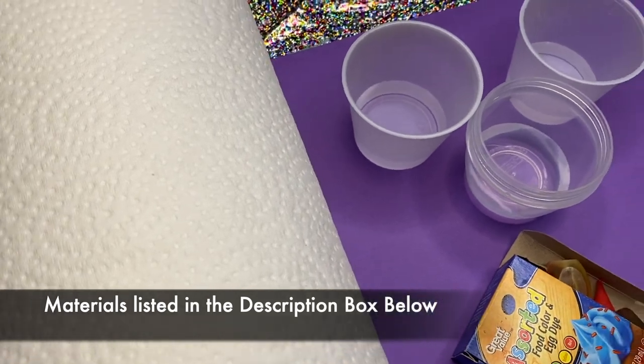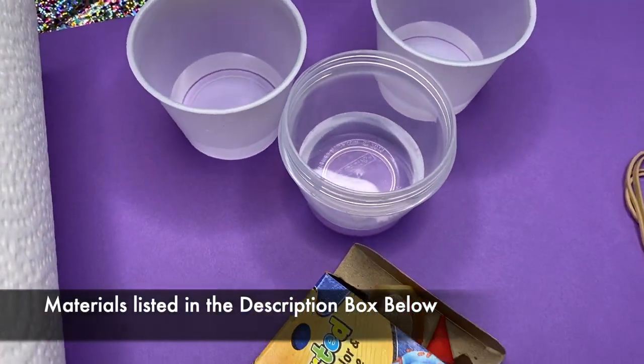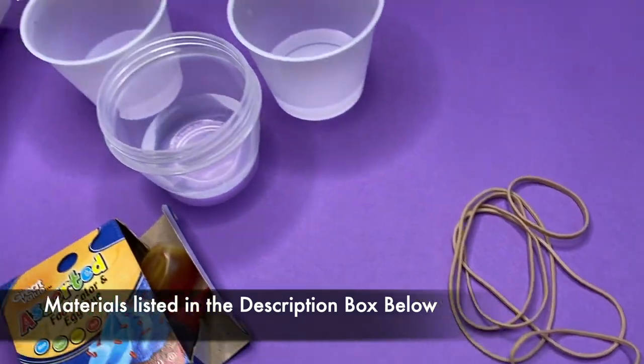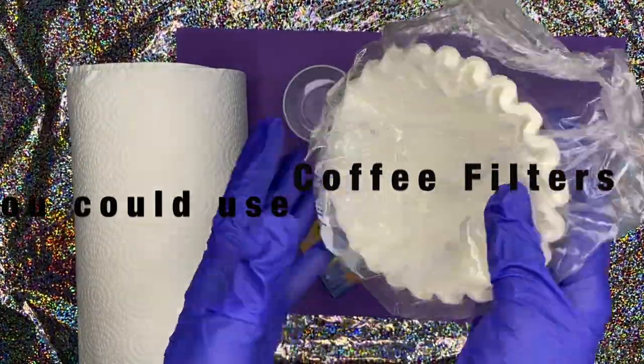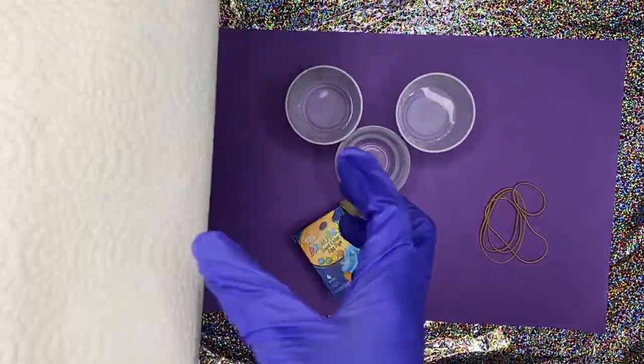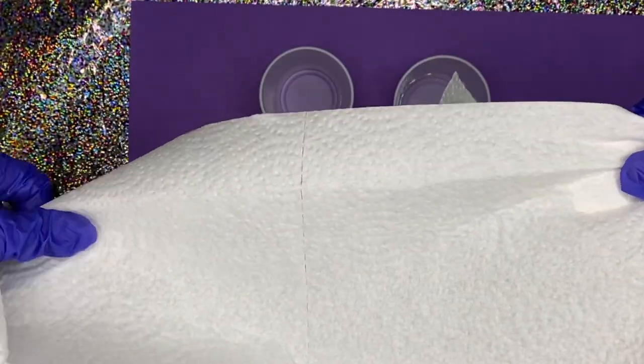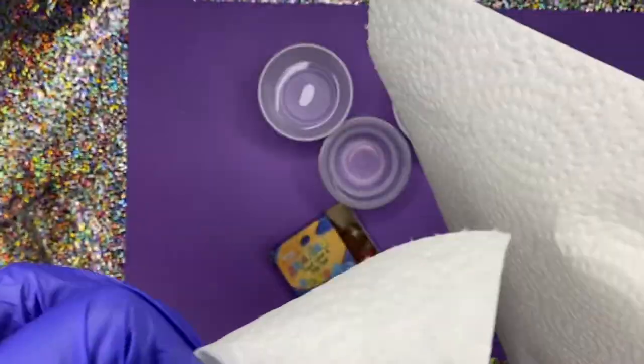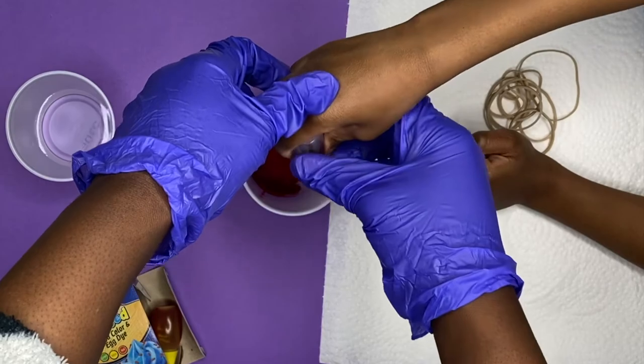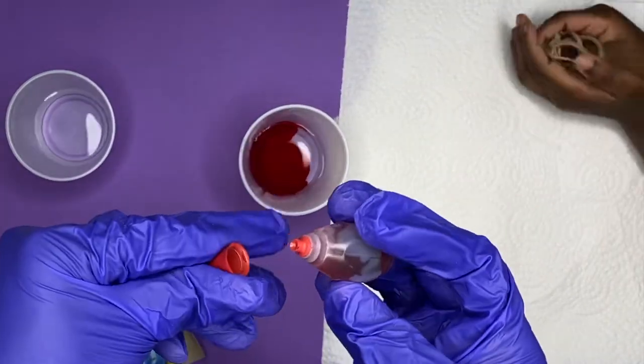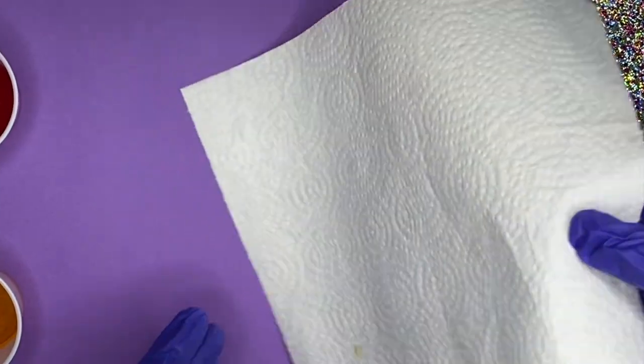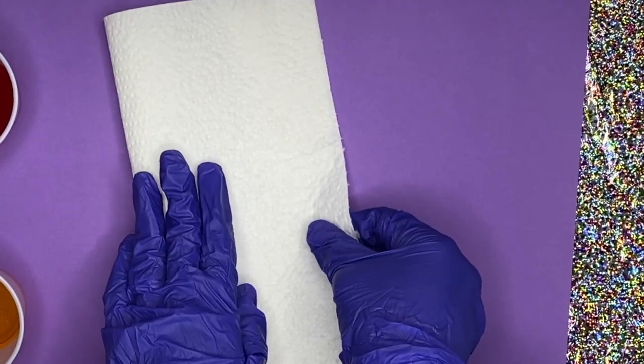Before we got started with everything today, I wanted to tell you all the materials are listed in the description box below. You're going to see me using paper towels, but if you don't have paper towels you can use coffee filters as well. They kind of give the same effect. So we're going to take a couple sheets of paper towels, cut the squares the way you want them. You can do the small rectangles or the big ones. We're deciding to do the big ones. So that means we have two rectangles together making one big size like this.